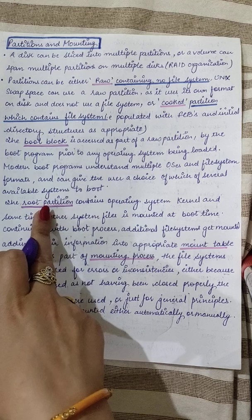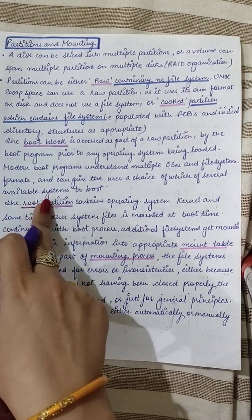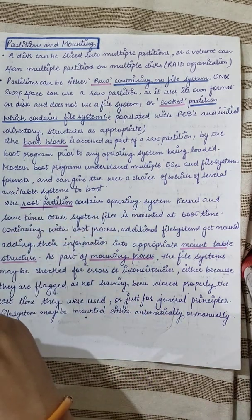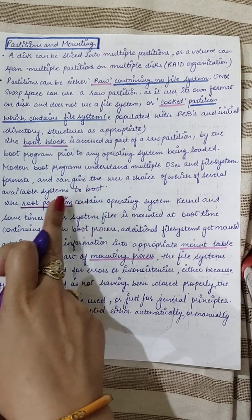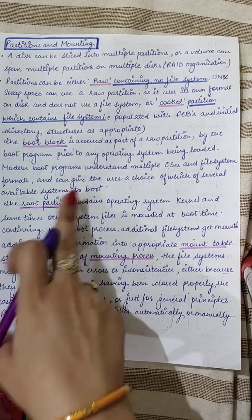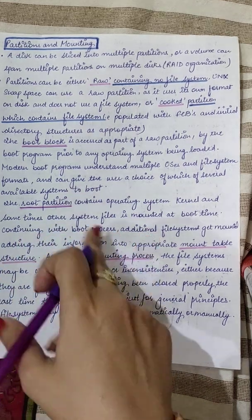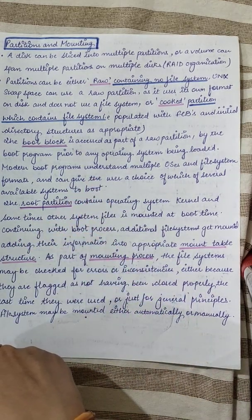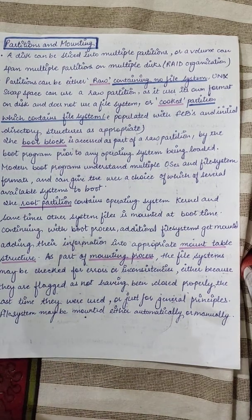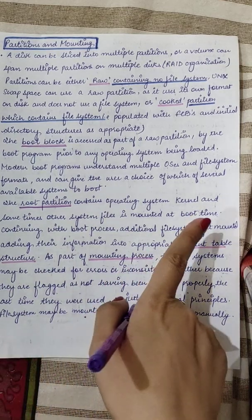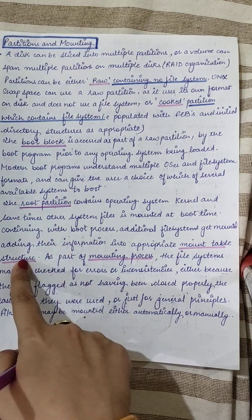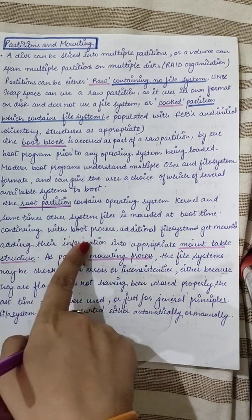The root partition refers to the partition which stores the kernel — the heart of your operating system. It may also contain some other system files which are mounted and attached to the root partition at boot time. Continuing with the boot process, additional file systems can also get mounted. If in the future a user wants to access certain files, they will need that file system mounted onto the root partition or the appropriate mount point.